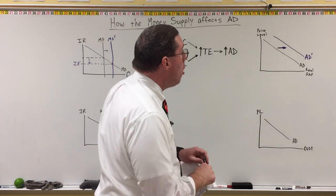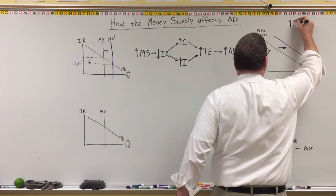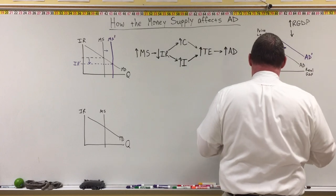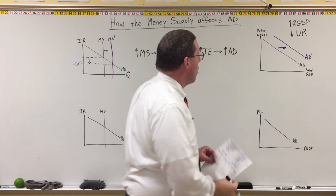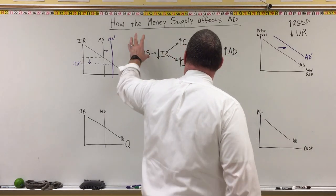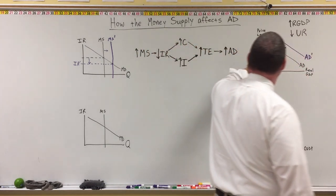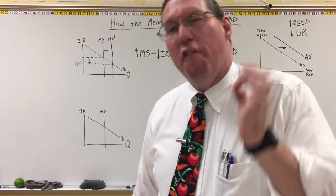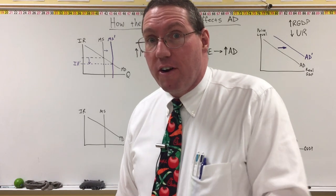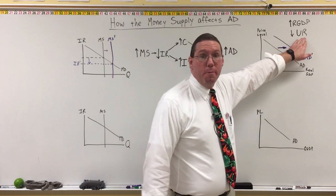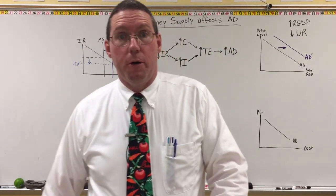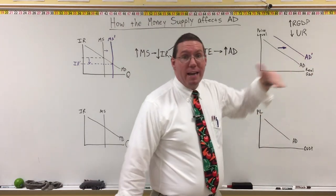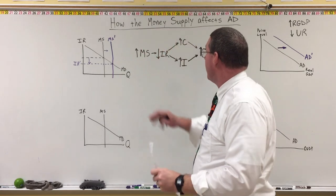What will that ultimately result in? When aggregate demand increases, we have an increase in real GDP, and by Okun's law, that also results in a decrease in the unemployment rate. The Fed knows that if they increase the money supply, there should be a chain reaction of events that ultimately results in an increase in real GDP and a decrease in unemployment. When there's an unemployment problem, the Fed knows it has monetary policy tools it can use to affect the unemployment rate — though that doesn't mean they always should.